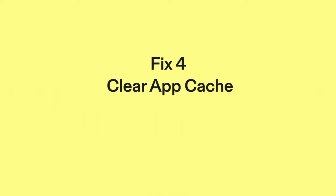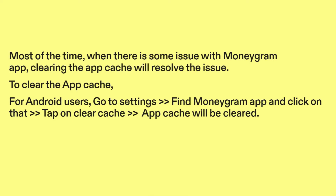Fix four: clear app cache. Most of the time, when there is some issue with the MoneyGram app, clearing the app cache will resolve the issue. To clear the app cache for Android users, go to Settings, find the MoneyGram app and click on it, then tap on Clear Cache. The app cache will be cleared.